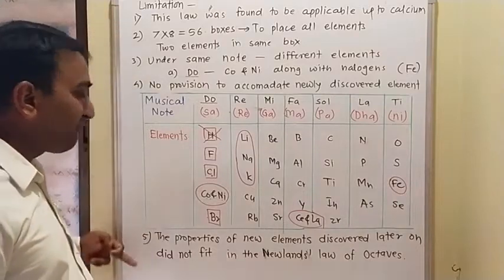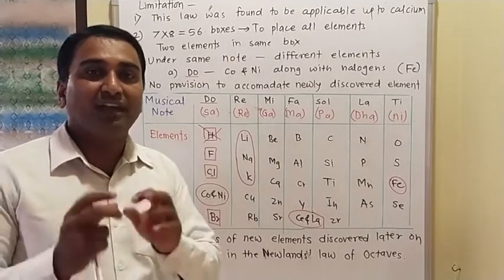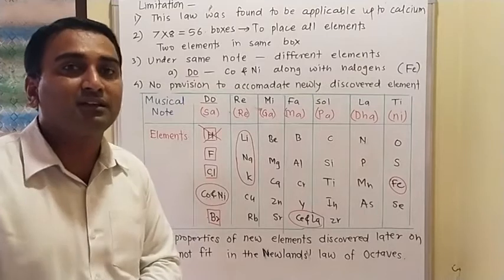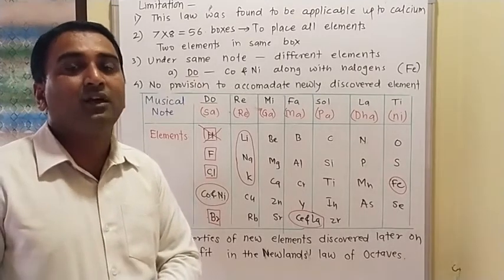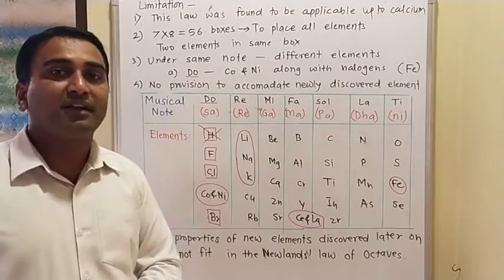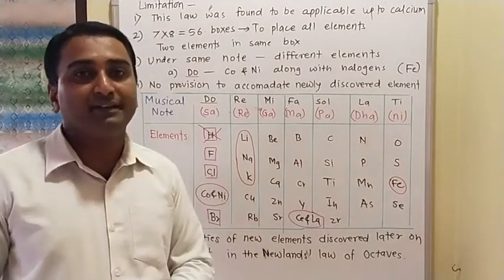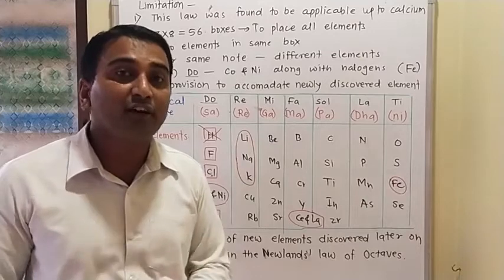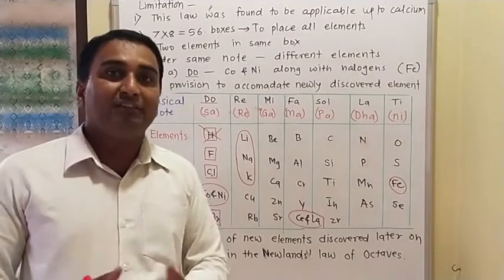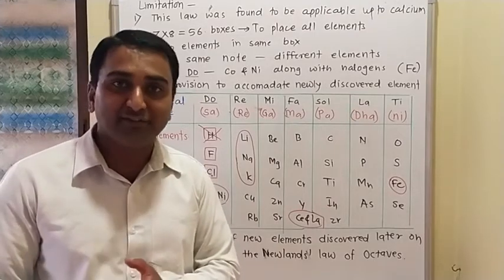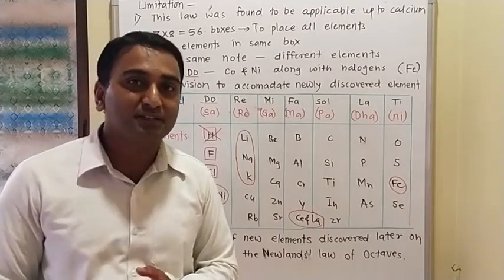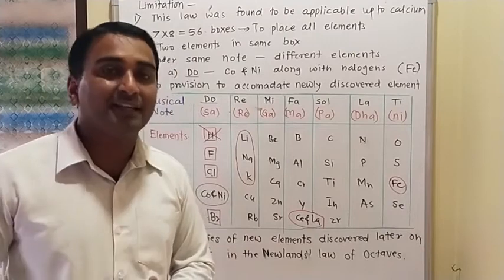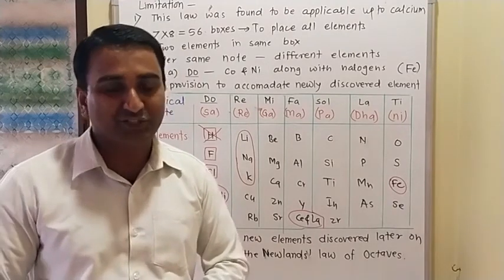There are five limitations in total — more detailed information is available in the textbook. To summarize what we discussed today: what is matter, types of matter, the definition of element, types of elements, the need for classification of elements, and the contributions of Döbereiner and Newlands. In the next session we will discuss Mendeleev's periodic table and the modern periodic table. Thank you.